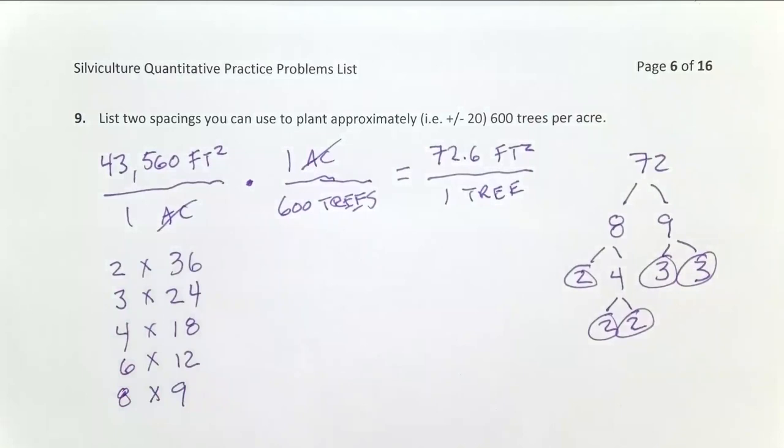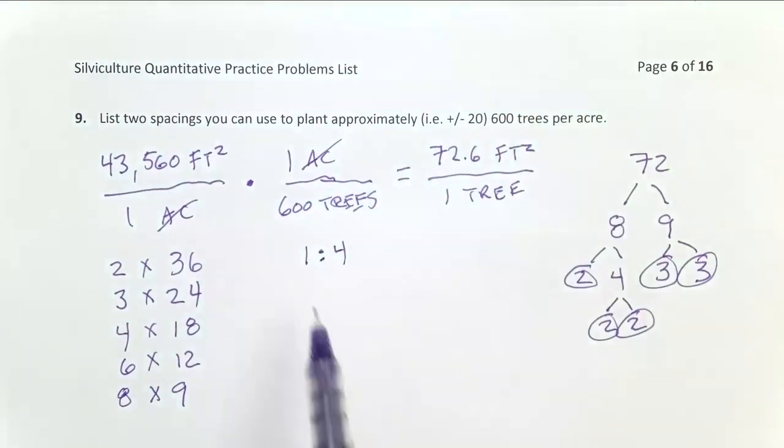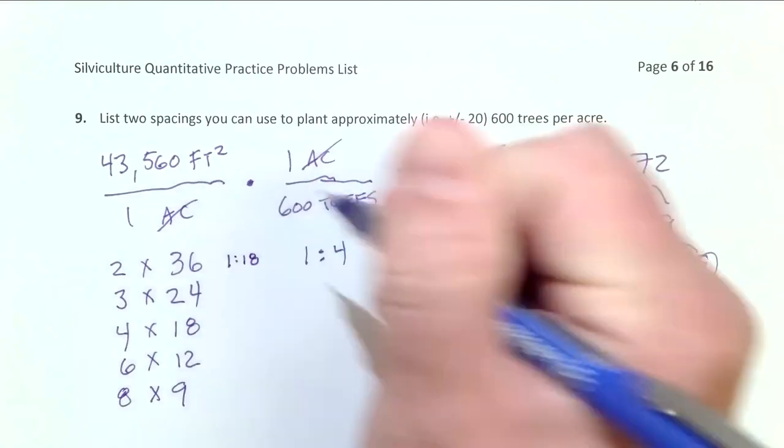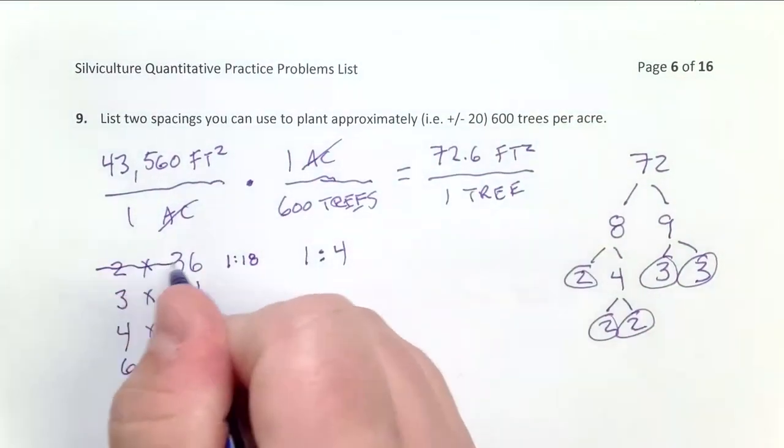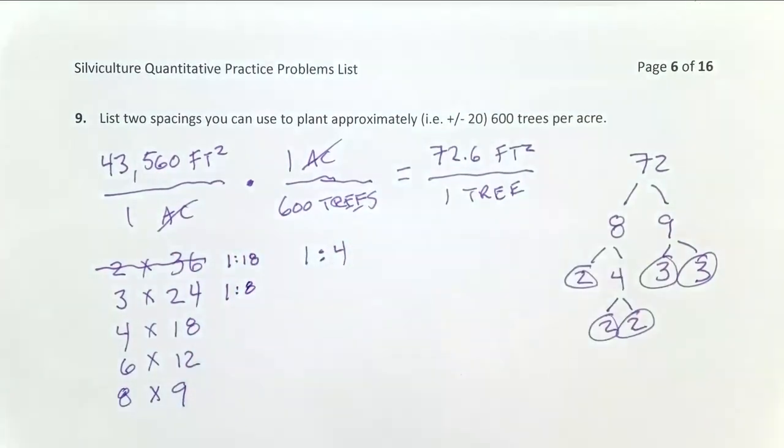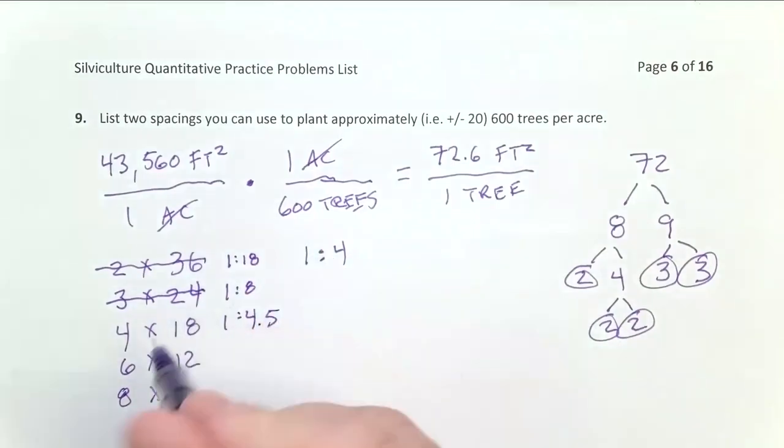But what I need to do now is I need to check to make sure that they're below a 1 to 4 ratio. What we found in forest plantations is that if you exceed that 1 to 4 ratio, there's lots of open space between your rows, you're wasting growing space, and your stand may not grow as well. And so as I start looking at these, 36 divided by 2, this gives me a 1 to 18 ratio, way over 1 to 4. So this one won't work. 24 divided by 3, this gives me a 1 to 8 ratio. That's over 1 to 4. That won't work. 18 divided by 4 gives me 1 to 4.5. We're getting much closer, right? But that won't work. So that's out.